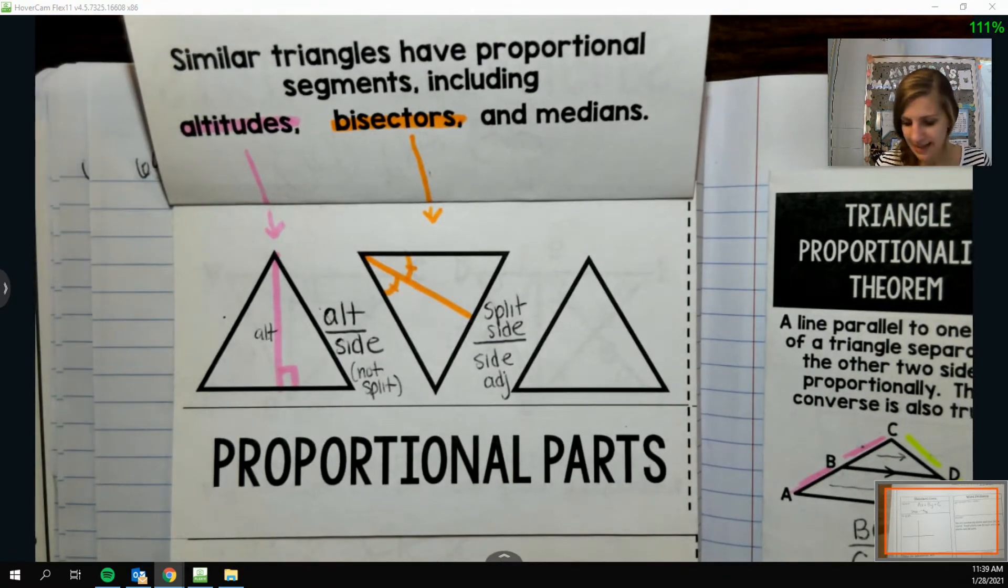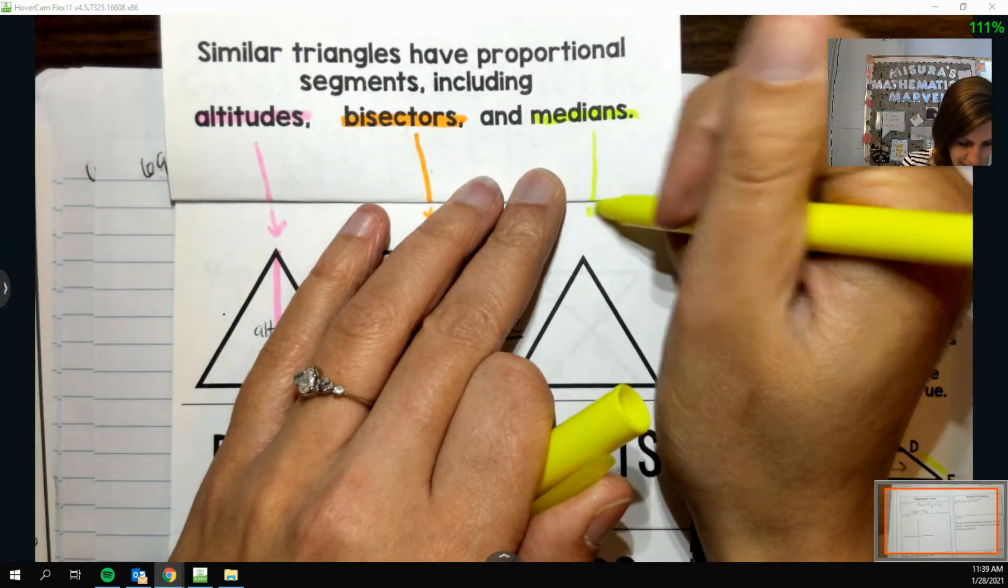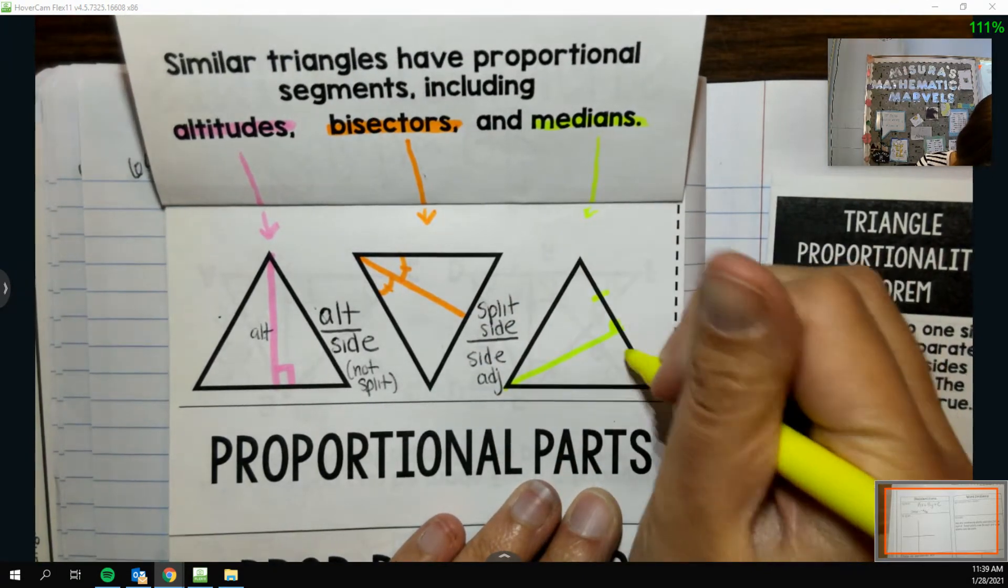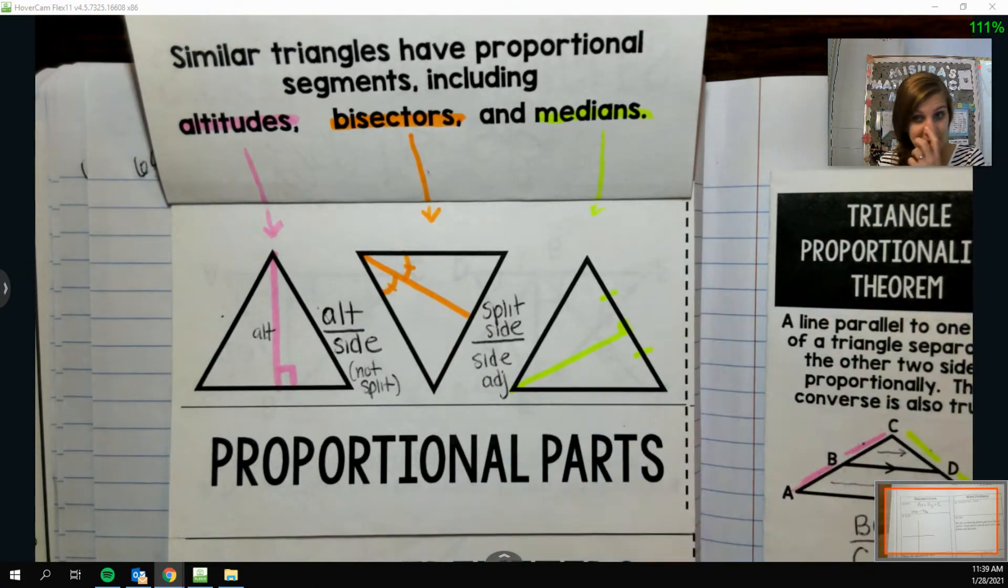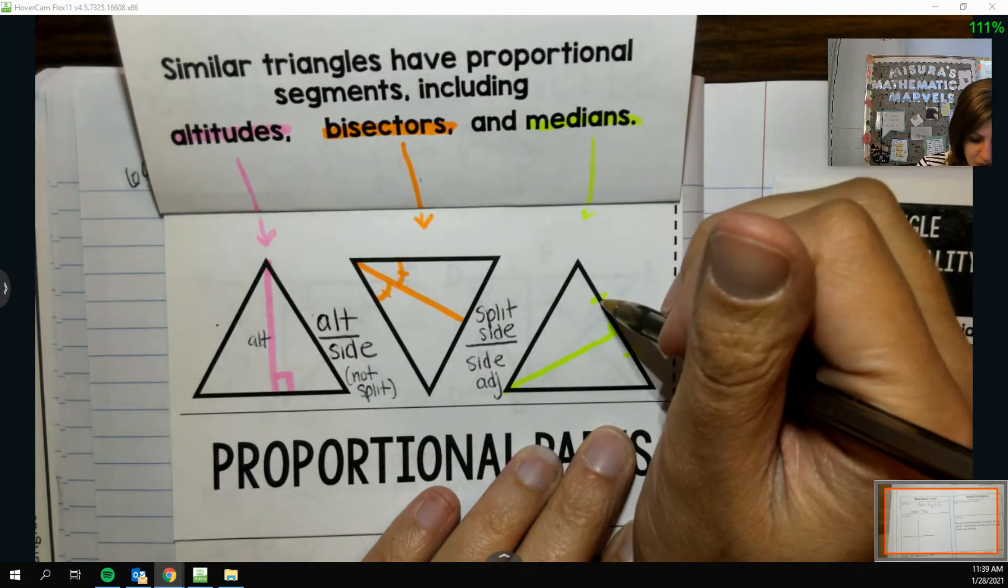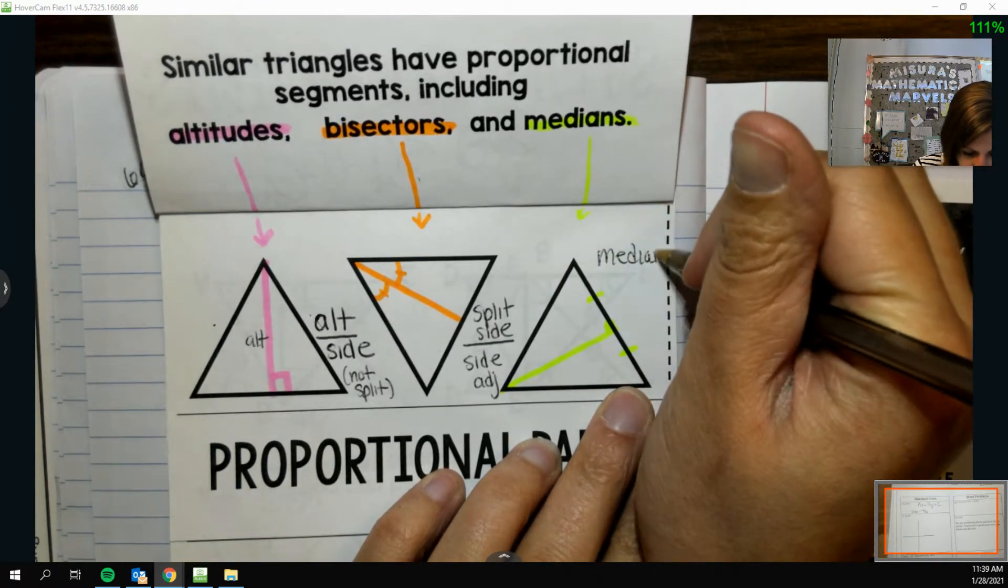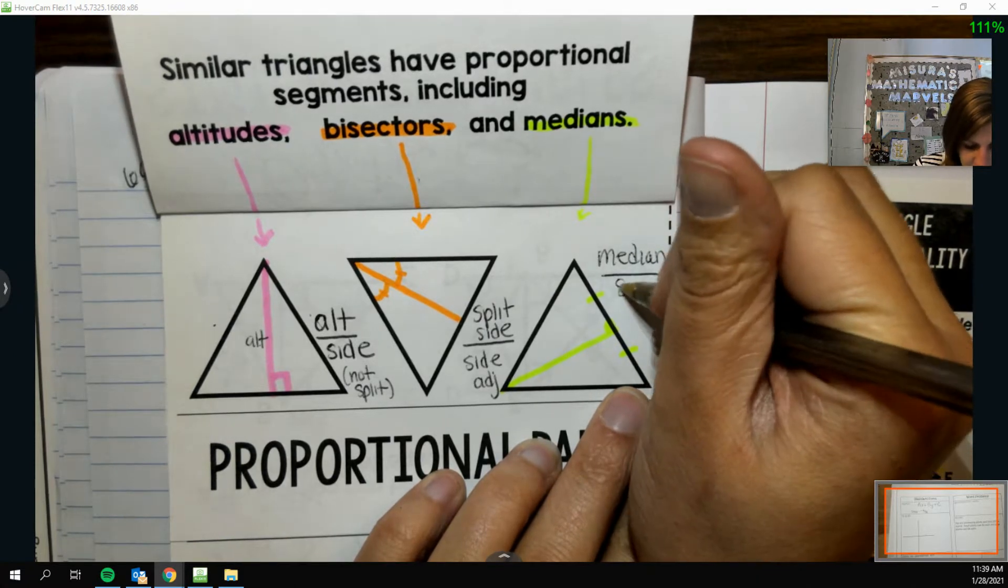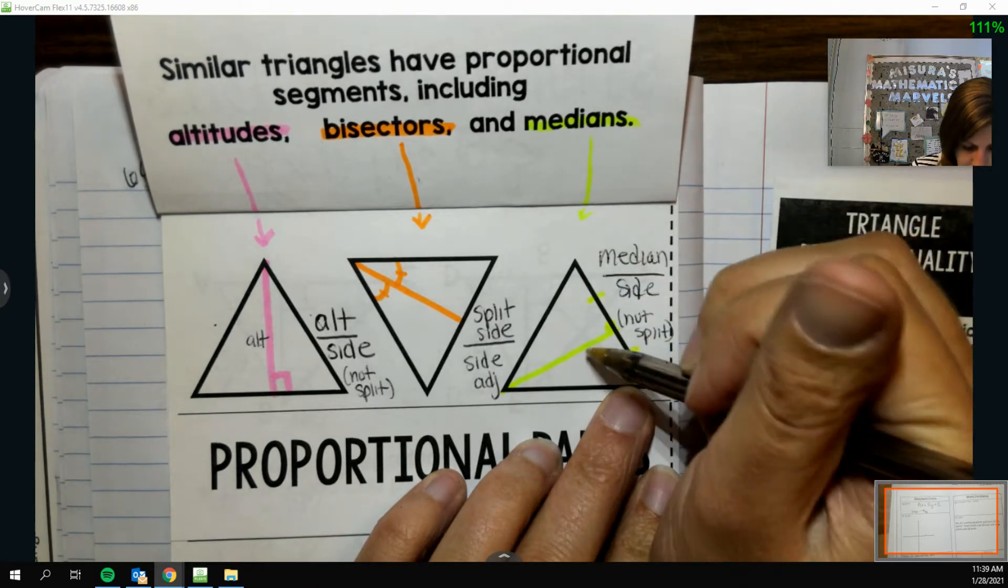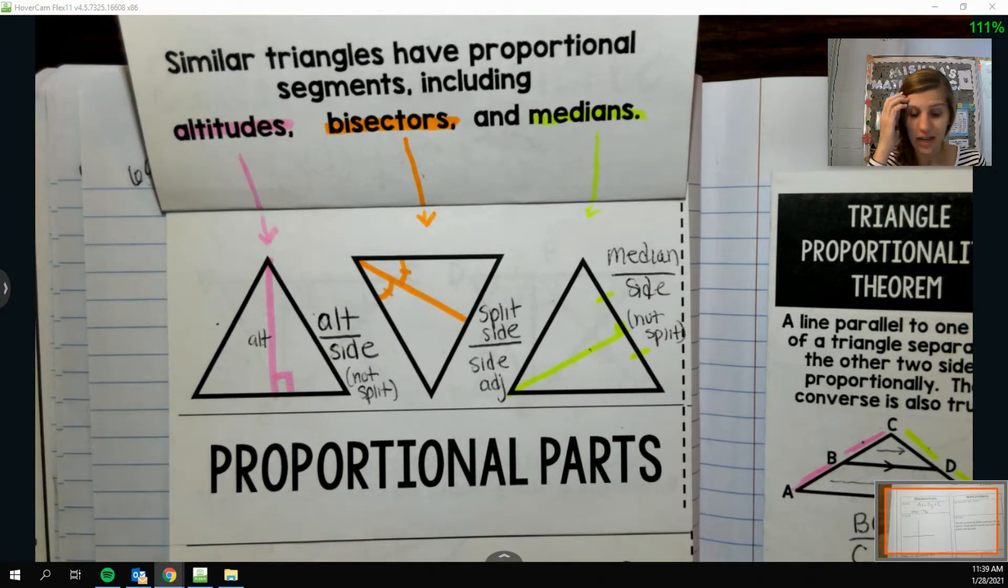And then lastly, with our median lines, and these are all of our fun lines from last chapter, is like if I draw the median, I'm connecting the midpoint to the angle opposite. So these are the same. And if that's the case, a really nice ratio that we can write there, we could do the median over the non-split side again. So like median over side, median over side, and get all those fun little ratios going on.